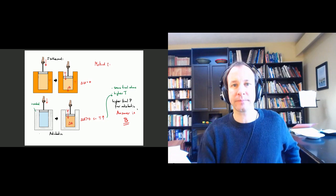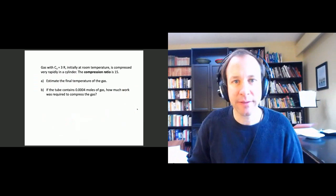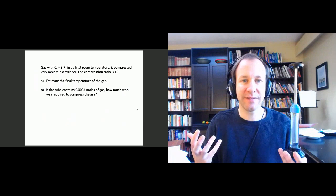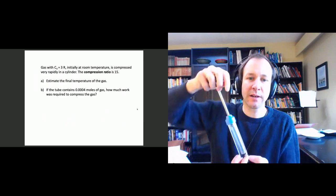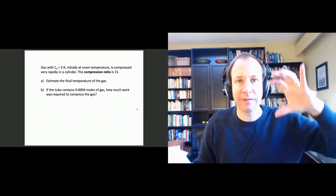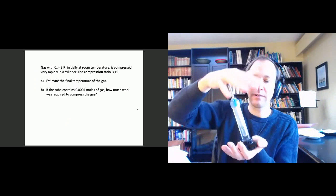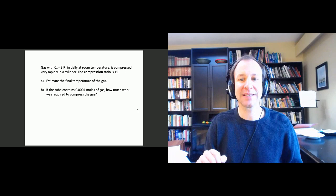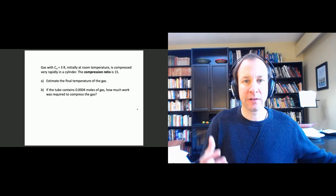Let's try to quantify that. Consider a situation where we have air in a cylinder. For air, we can approximate Cv to be about 3R. The gas is initially at room temperature, and we're going to compress it very rapidly. The compression ratio — the ratio between the initial volume and the final volume — is a factor of 15. I'm going to press this down very rapidly so the volume decreases by a factor of 15. Estimate the final temperature of the gas and how much work was required to do this compression.